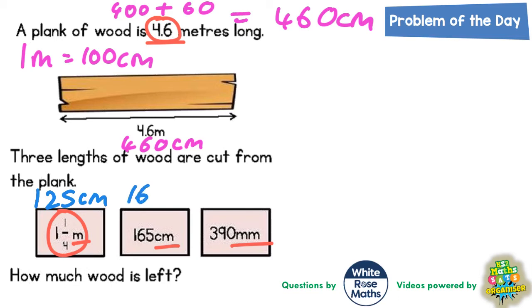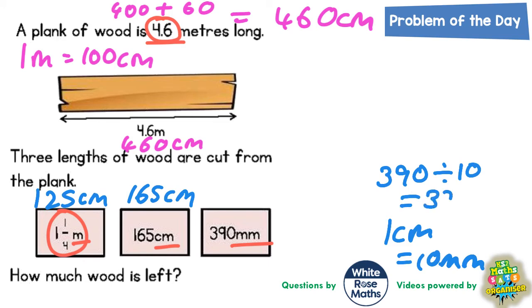165 centimeters is already in centimeters, so we'll leave that one as it is. And 390 millimeters: well, one centimeter is 10 millimeters, so if we figure out how many lots of 10 millimeters goes into 390, we'll have how many centimeters that is. Well, 390 divided by 10 is 39, so it's going to be 39 centimeters. So the final piece of wood that's being cut off is 39 centimeters.